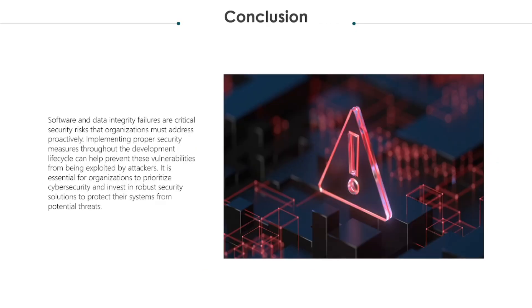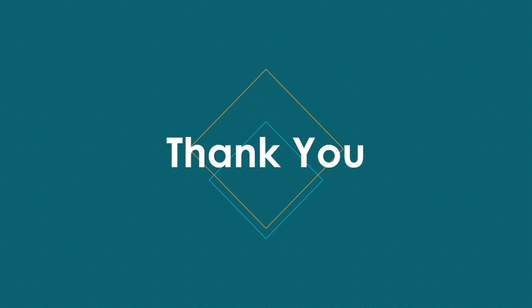Software and data integrity failures are critical security risks that organizations must address proactively. Implementing proper security measures throughout the development lifecycle can help prevent these vulnerabilities from being exploited by attackers. It is essential for organizations to prioritize cybersecurity and invest in robust security solutions to protect their systems from potential threats. This is all about the A08 vulnerability. We hope this video helped in learning about OWASP top 8 application security risk — software and data integrity failures. Thanks for watching. Please share this video and help secure the digital world. Visit our website vistainfosec.com and subscribe to our channel to receive updates like this. Thank you.